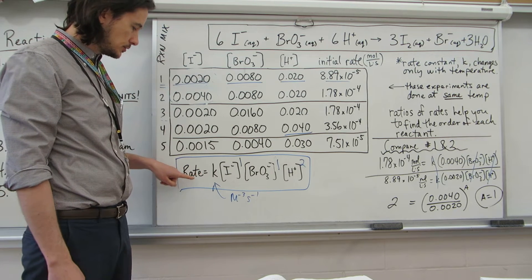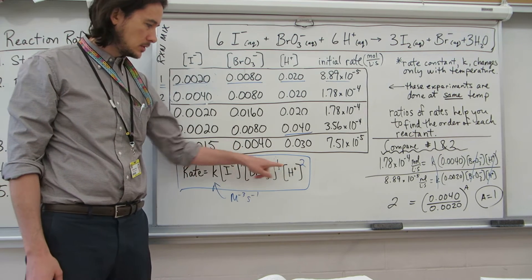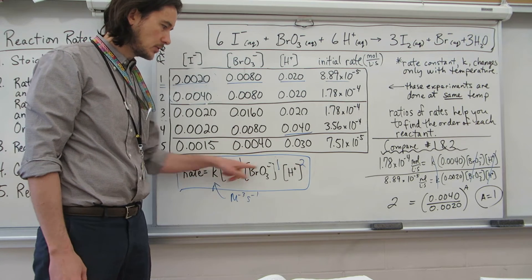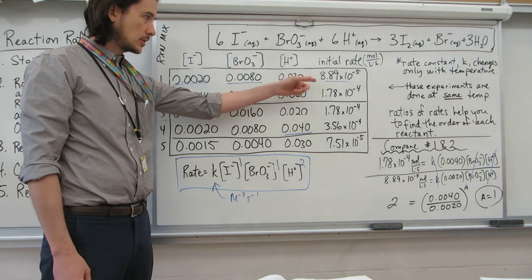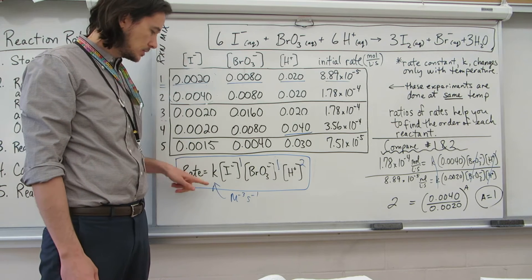If you want to solve for K, as long as you know the rate and you know the orders of the reaction with respect to all the reactants, and you know their concentrations when that rate is true, then you can solve for K.